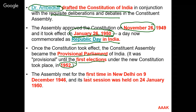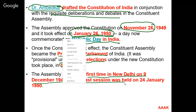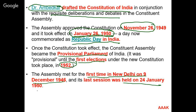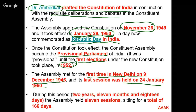The assembly met for the first time on 9 December 1946 and for the last time on 24 January 1950. Between the first and last day, there was a time gap of two years, 11 months and 18 days. During this period, it held not less than 11 sessions and a total of 166 days.